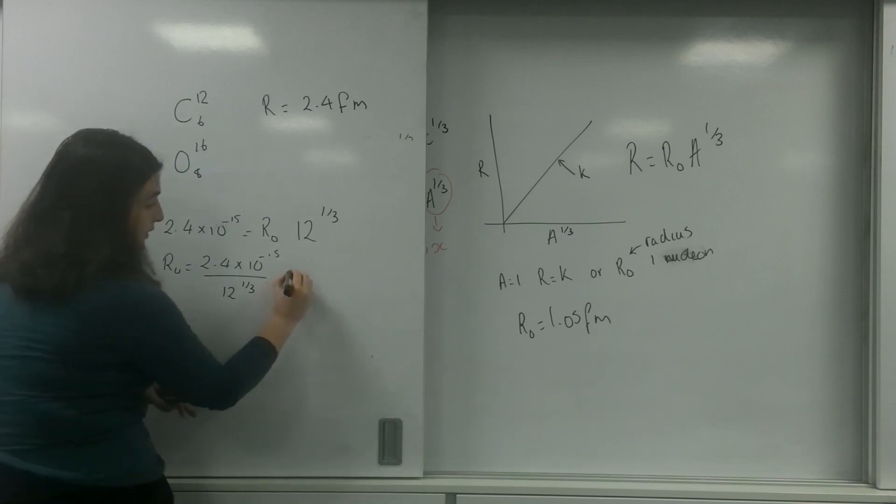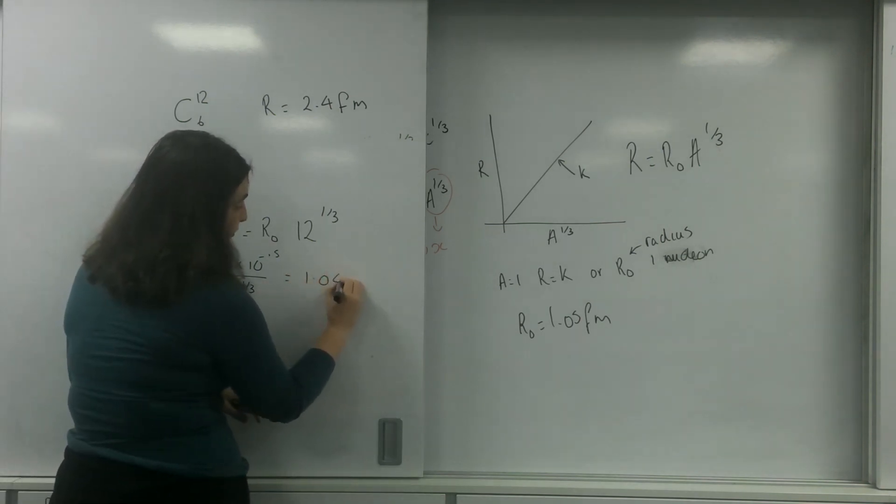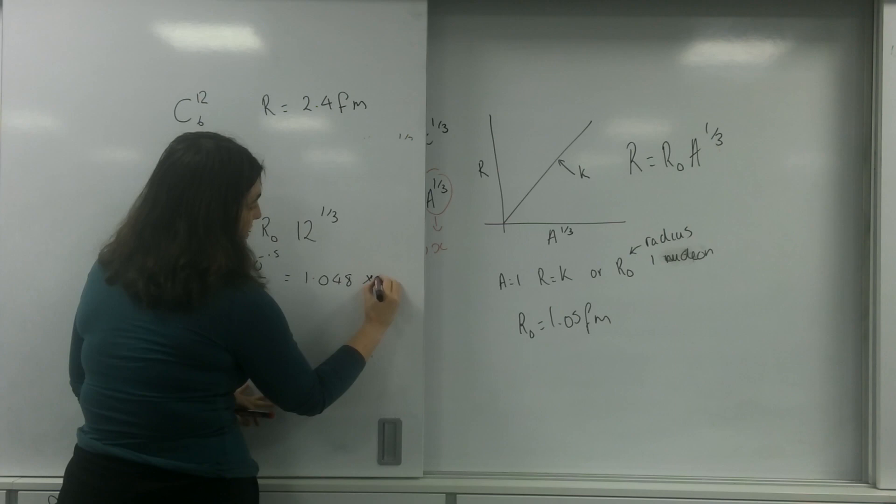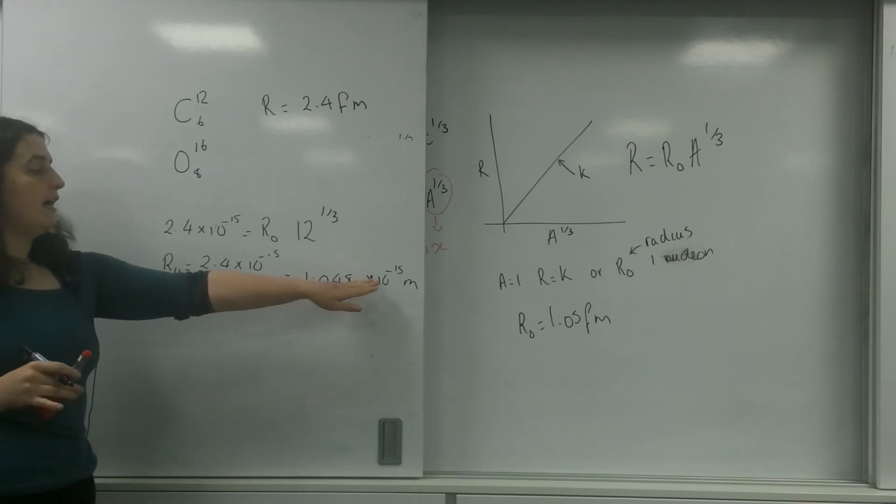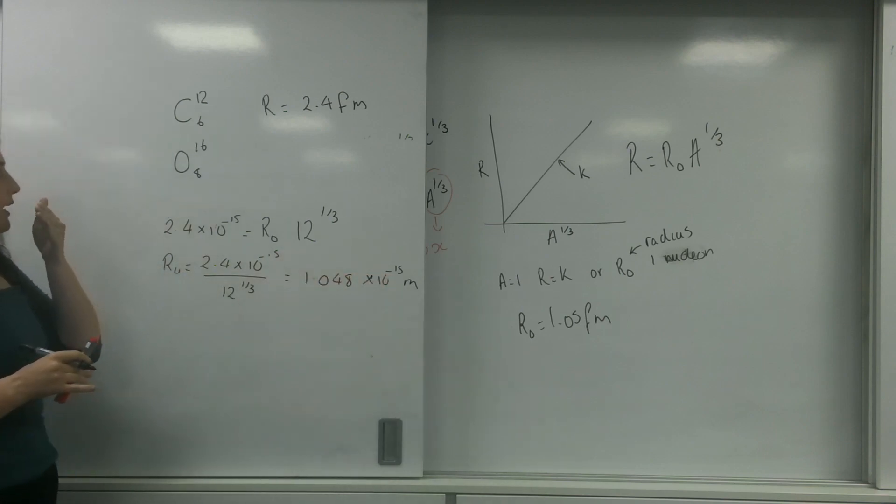And I get an answer for r naught of being 1.048 times 10 to the minus 15 meters. I know this is in the right region because it has the minus 15 there.